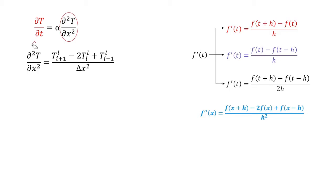The temperature is denoted using T with subscript i and superscript l. The subscript i stands for the node number whereas the superscript l stands for the time step. Just as i represents the current node, i plus 1 represents the next node and i minus 1 represents the previous node. In time, l represents the current time step, l plus 1 represents the next time step, and l minus 1 represents the previous time step. For a two-dimensional domain, temperature T would have subscripts i and j and superscript l, but for the present one-dimensional case, we use only the single subscript i.